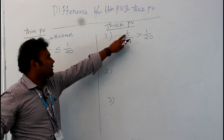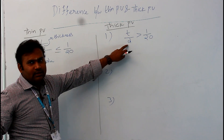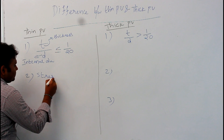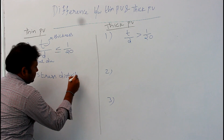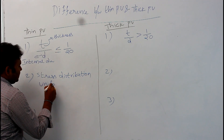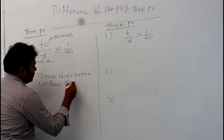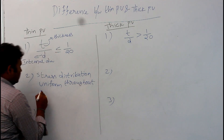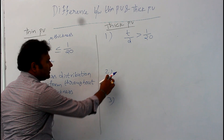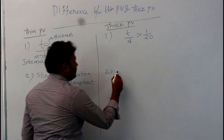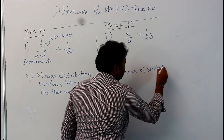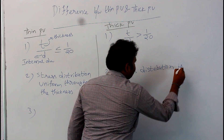Here also the same notations apply: T means thickness and D means internal diameter. In a thin pressure vessel, the stress distribution is assumed to be uniform throughout the thickness, whereas in a thick pressure vessel, the stress distribution is non-uniform.